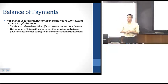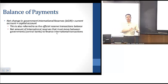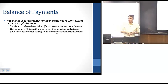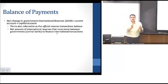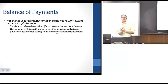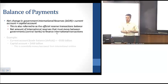How do we think about this in terms of the balance of payments and the role of the central bank? That gets us to government international reserves — also referred to as the official reserve transactions balance. The change in government international reserves is equal to the current account plus the capital account. This represents the net amount of international reserves that has to move between central banks in order to finance international transactions. If we buy imported goods and borrow from abroad through capital markets to pay for some of that, the rest of the money must come from central banks.